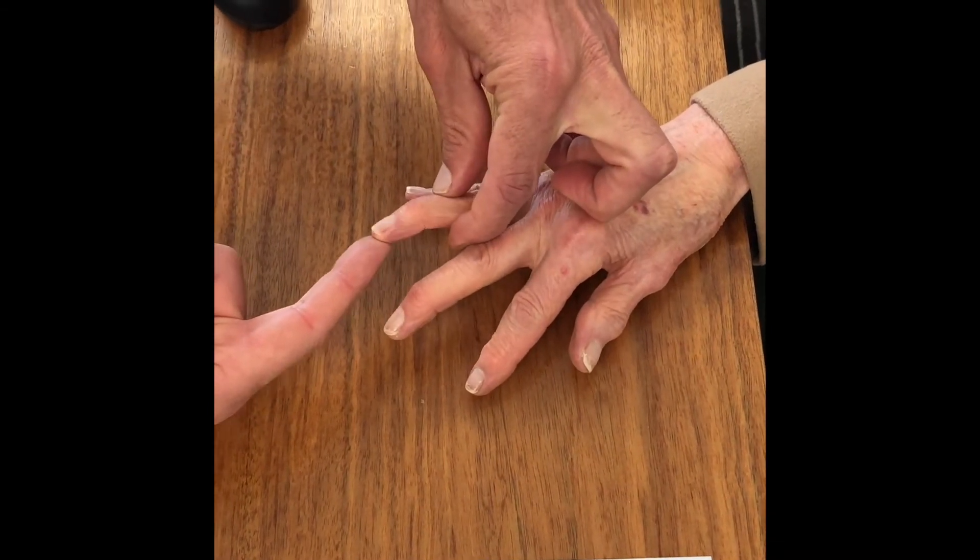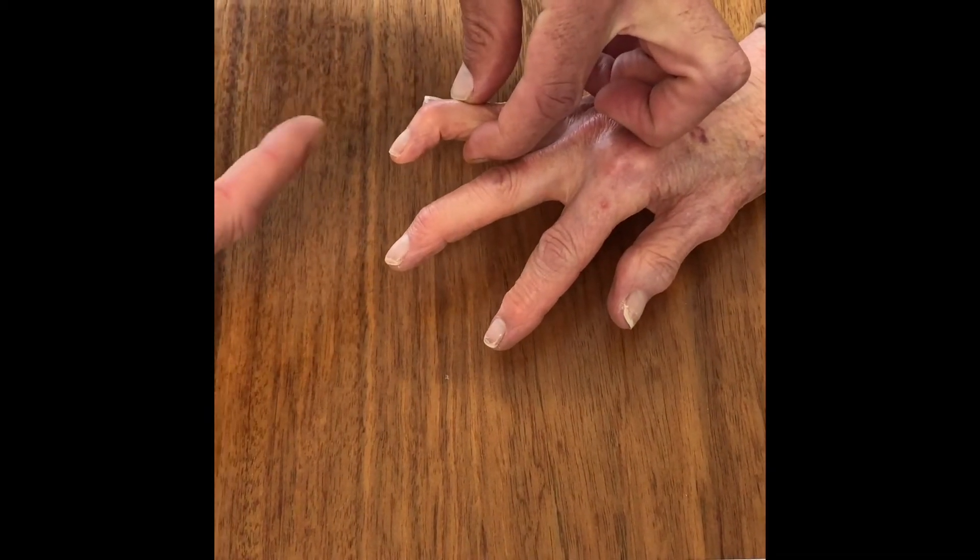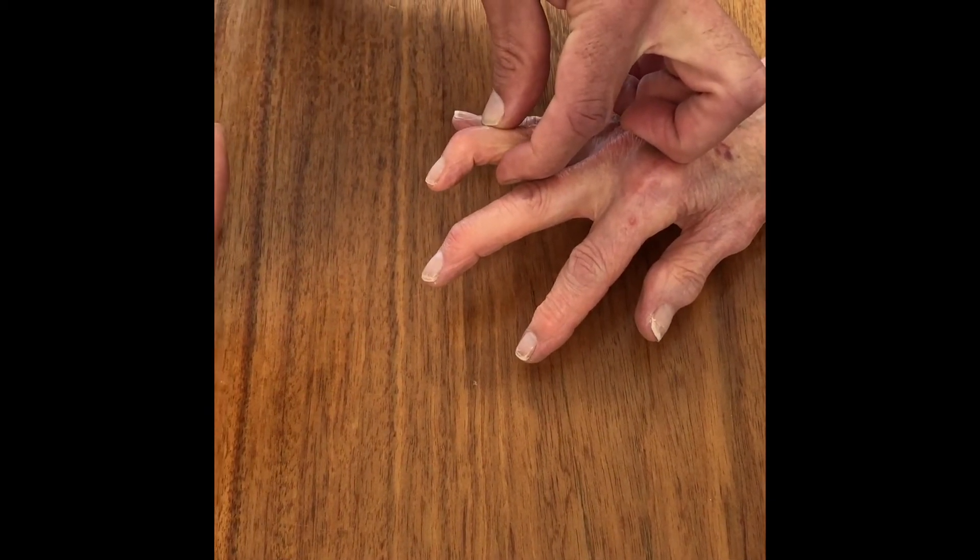Same goes for the ring finger. Full extension, but she cannot maintain it there. It drops down to about 70 degrees of extensor lag.